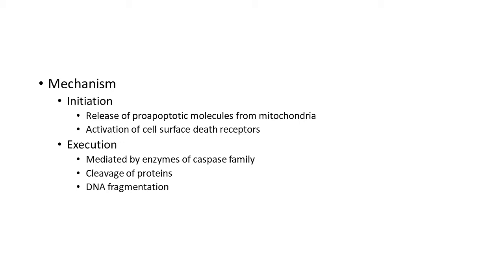In the intrinsic or mitochondrial pathway, there is a release of pro-apoptotic molecules from the mitochondria. This happens due to increased permeability of the mitochondria. Mitochondria contains a protein called cytochrome C; when there is increased permeability, this cytochrome C escapes into the cytoplasm and triggers the apoptotic mechanism. This is called the intrinsic pathway.